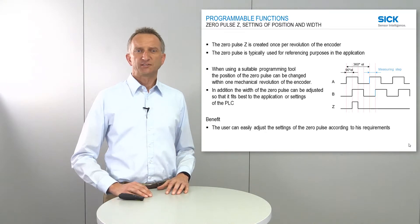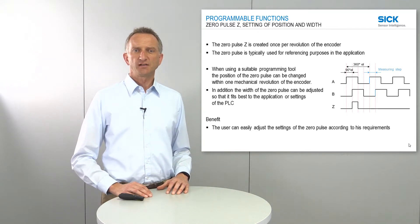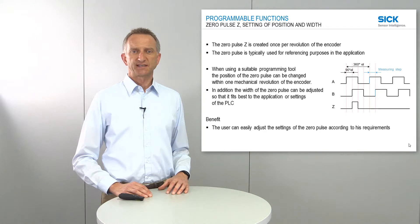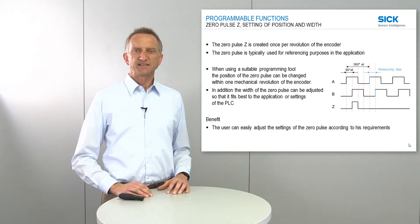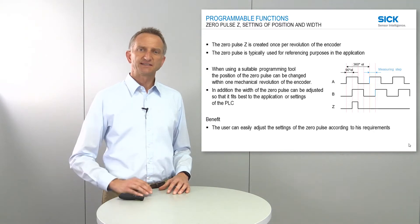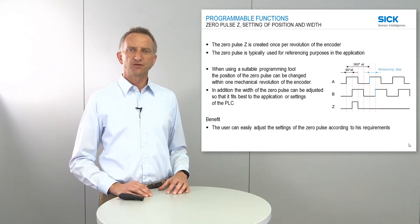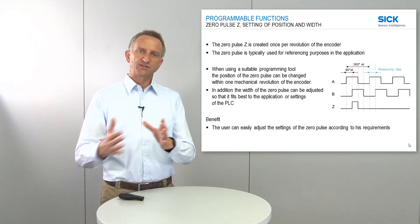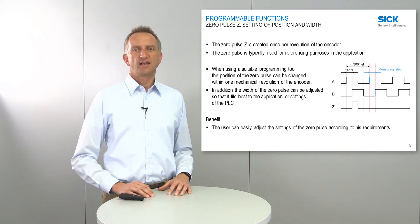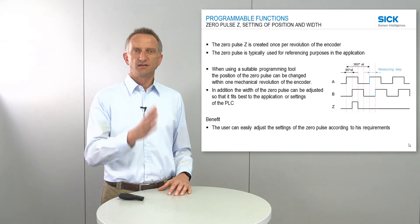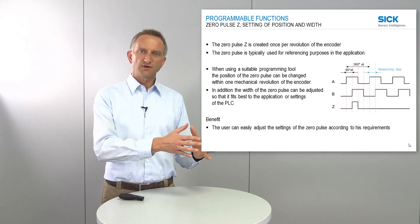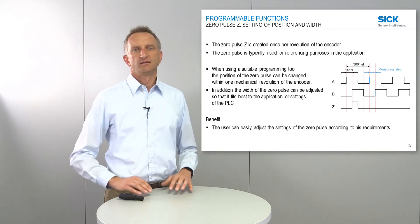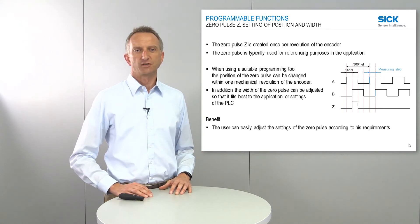By using the possibility to adapt the zero-pulse, the user can easily adjust the settings of the encoder so that it fits best to the application. Especially when using this as a reference, a customer can start the referencing to his start position and then assign also the position of the zero-pulse, so that the physical reference position and the electrical position of the zero-pulse are in the same position.